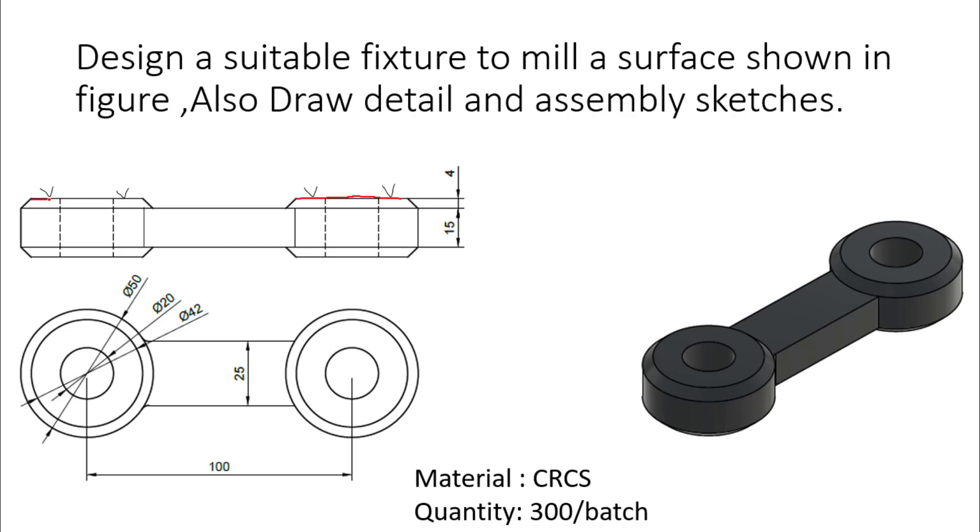To mill this surface we need to design a milling fixture. This surface can be milled with an end mill cutter. End milling operation can be done on this surface and we can produce surface finishing. This triangle surface shows that we need to finish this surface with end mill cutter. Material of this component is CRCS and quantity is 300 per batch.